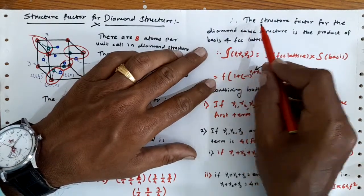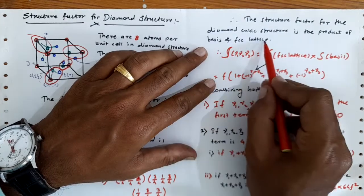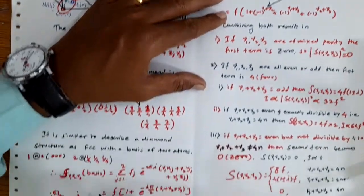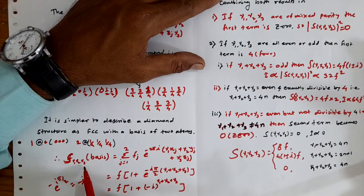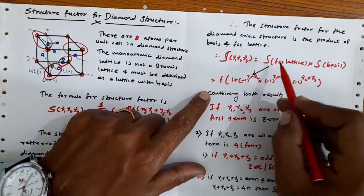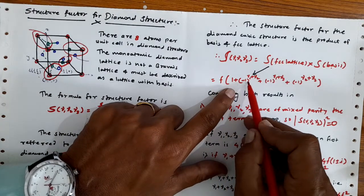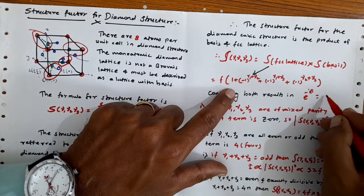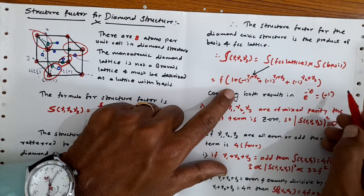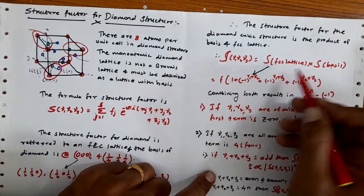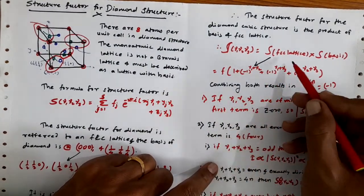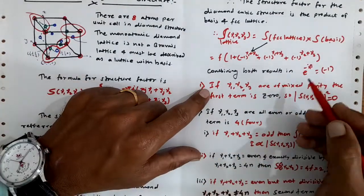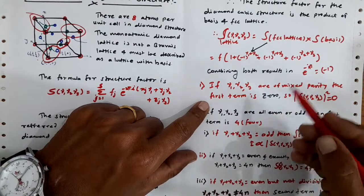The total structure factor for the diamond cubic structure is the product of the FCC lattice structure factor and the basis structure factor. We have already calculated the basis structure factor, and we know the FCC lattice structure factor from previous lectures. Combining the basis result and the FCC lattice result gives the total structure factor for the diamond structure, determined by the ν₁, ν₂, ν₃ values.